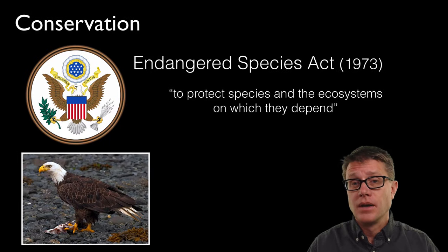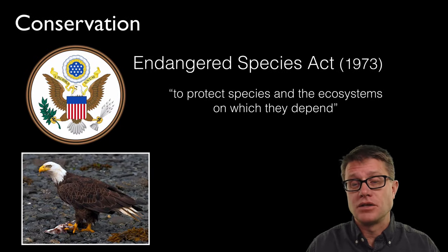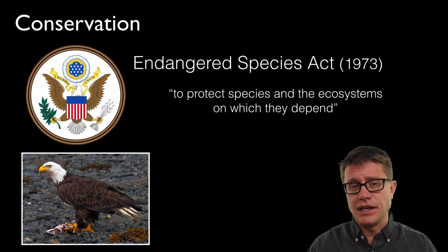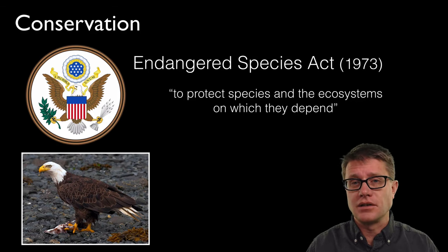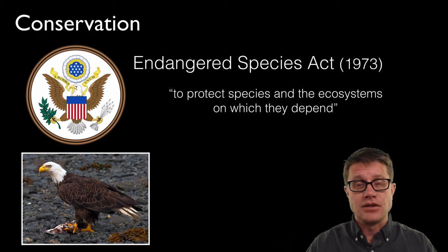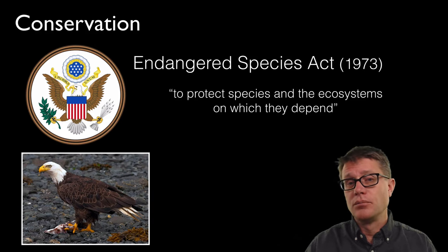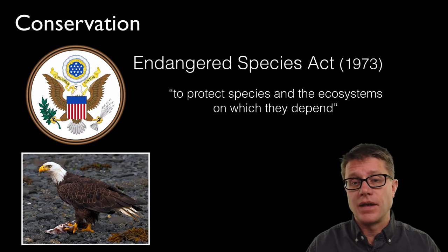So what do we do? Well, what we can do is pass laws. In the U.S. we passed the Endangered Species Act in 1973 to protect species and the ecosystems on which they depend. It essentially is a list. Bald eagles are a classic example that were added to the endangered species list — there were around 500 breeding pairs in the lower 48, and now there are over 10,000. Once they recover we remove them from that list.